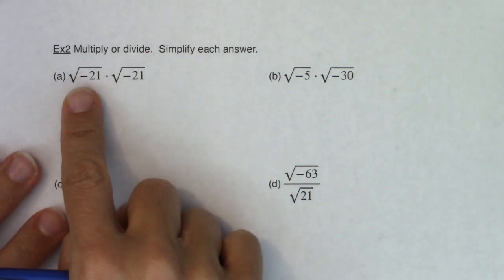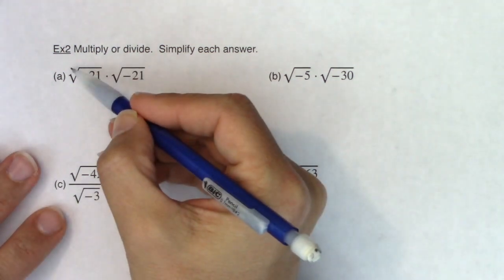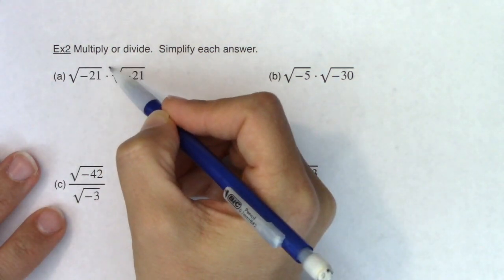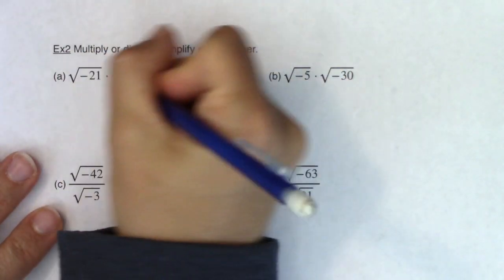So we have here the square root of negative 21 times the square root of negative 21. And the first thing I notice is I have an even index and a negative radicand. Even index, negative radicand. So what I need to do first is take the i's out.